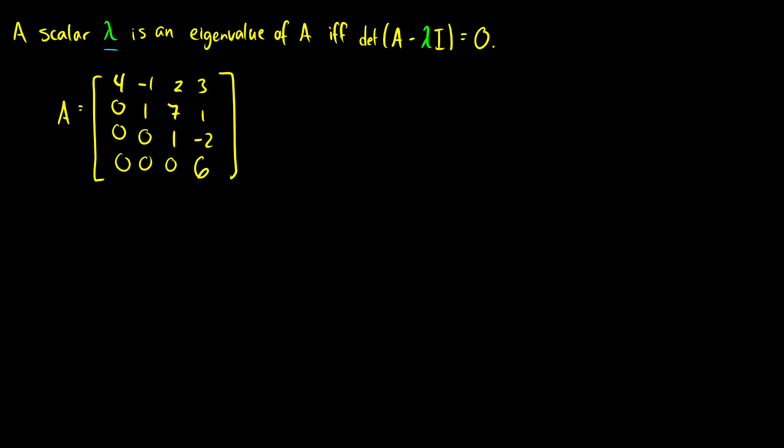Here I have a matrix in upper triangular form with diagonal entries 4, 1, 1, and 6. We know that the eigenvalues of this matrix are going to be 4, 1, 1, and 6. I want to show that the determinant of A minus lambda I will confirm that, giving us lambda equal to 4, 1, 1, and 6.